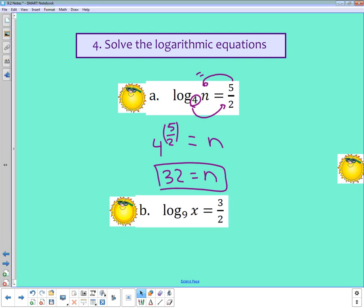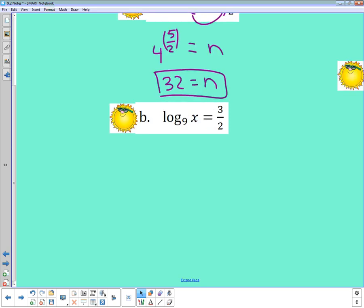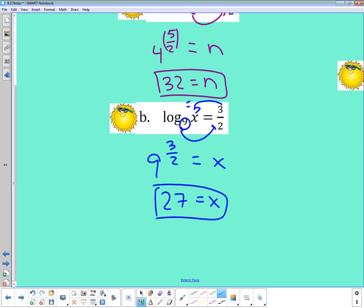In part B, now I'm looking at 9 to the 3/2 power is equal to x. I have the log base 9 of x is equal to 3/2. So I want to know 9 to the 3/2 power, what does that equal? 9 to the 3/2 equaling x. And again, use parentheses when you plug that in, and you'd find out that 9 to the 3/2 is 27. So 27 is my x.